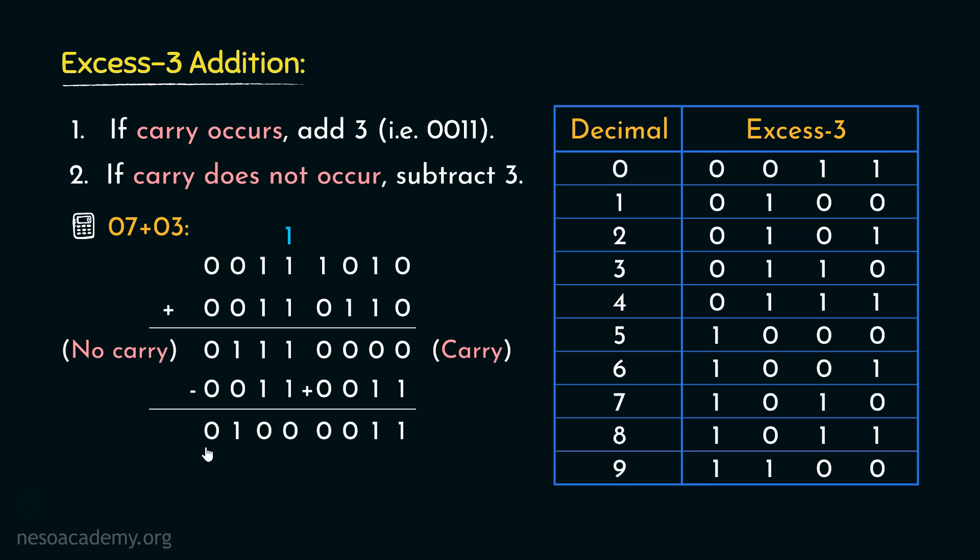Observe the patterns. 0100 is the encoding of 1 in XS3, right? Now, 0011 is the encoding of 0 in XS3. So, yes, we ended up having 10, that is 10. So, basically, whenever carry occurs, we need to add 3. And when no carry is there, we will be subtracting 3. So, this is how the XS3 addition is performed.